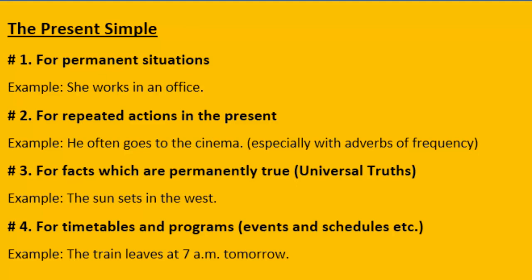Any action that is repeatedly done, or that we often do, is called a repeated action. For example: 'He often goes to the cinema.' It means whenever he has time he repeats this action of going to the cinema — so any action that he repeats, whether done yesterday, today, or tomorrow.